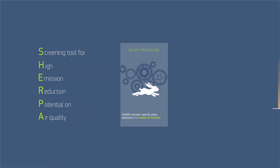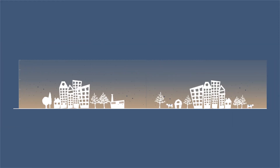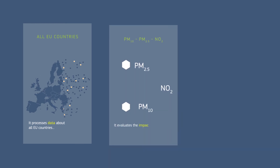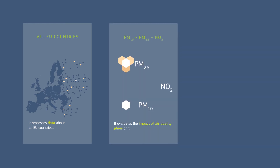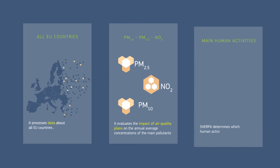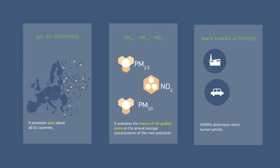With SHERPA, you can test the impact of alternative policy scenarios and foresee their likely effect. You can assess the impact of air quality plans in regions and cities across European countries, and evaluate the impact of these plans on the annual average concentrations of the main pollutants. You can also determine which human activity, such as industry, transport or agriculture, is the main cause of pollution in a given area.